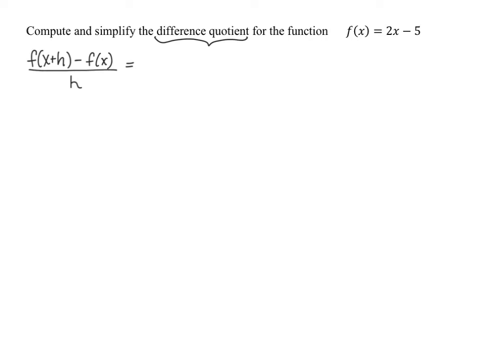Let's start one piece at a time. I'm going to start with the f of x plus h portion and focus on what's highlighted in red. What is in the parentheses is your input. So this means we are going to take x plus h and input it into our function in place of x. If I substitute x plus h into our function in place of x, I'm going to have 2 times the quantity x plus h minus 5.